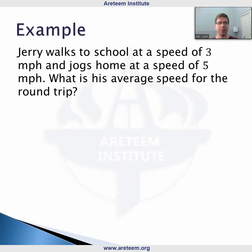Let's look at an example. Suppose Jerry walks to school at a speed of 3 miles per hour and jogs home at a speed of 5 miles per hour. So we know he has home and school and he's going back and forth between these two places.